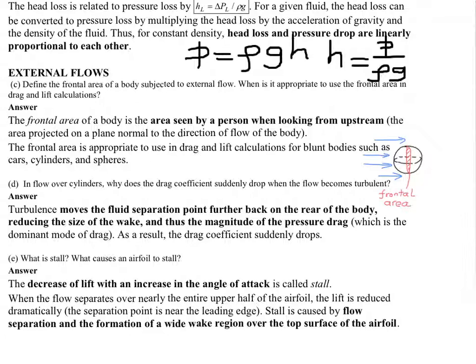Now let's look at part d: in flow over cylinders, why does the drag coefficient drop when the flow becomes turbulent? The answer is: turbulence moves the fluid separation point further back to the rear of the body.